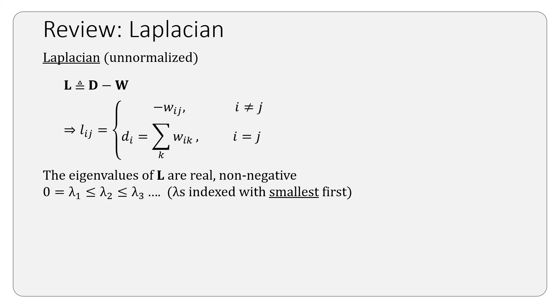Quick review: we know the definition of the Laplacian. It's the degree matrix minus the weight matrix. The eigenvalues of the Laplacian are real and non-negative and we order the eigenvalues so that the smallest one, which is lambda 1, comes first.